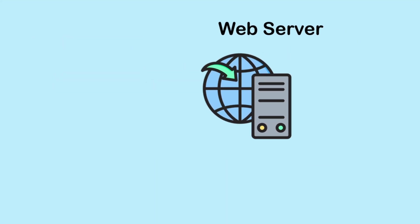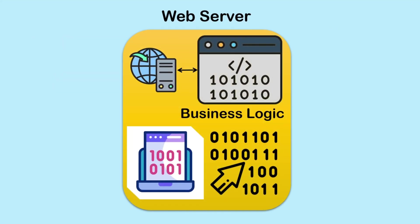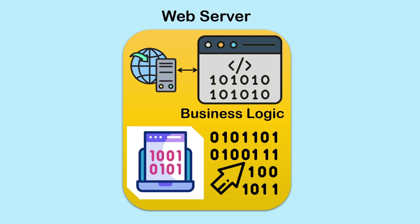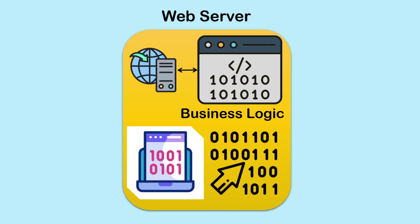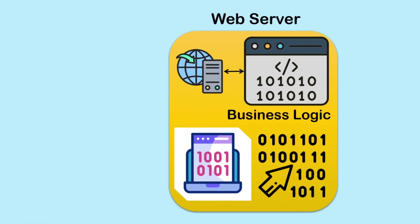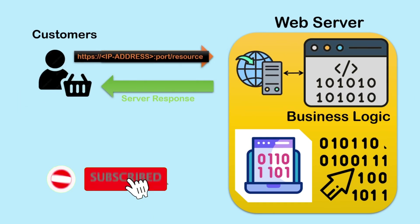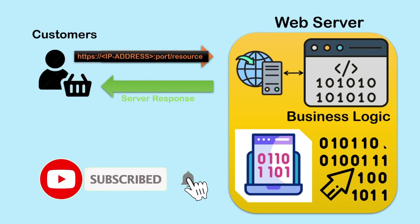The main component in this setup is a web server which has all the business logic running inside. That web server is eventually a computer where your application is deployed, and if anyone wants to access your application they need to know the IP address of this server. This is how basically the internet works.